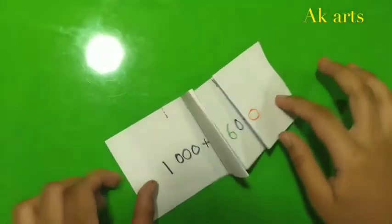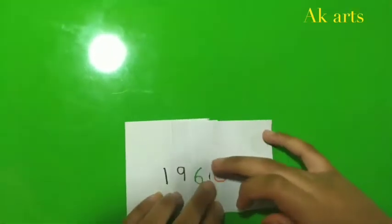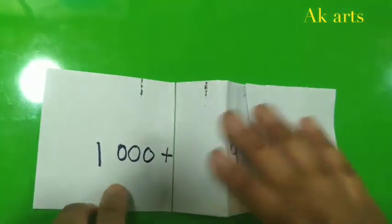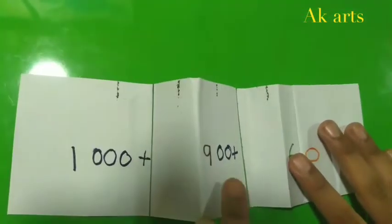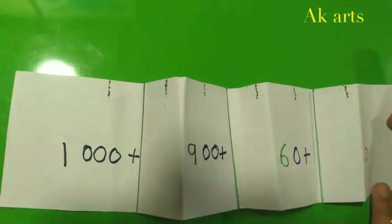Now you can only see the numbers after folding back. One thousand plus nine hundred plus sixty plus zero.